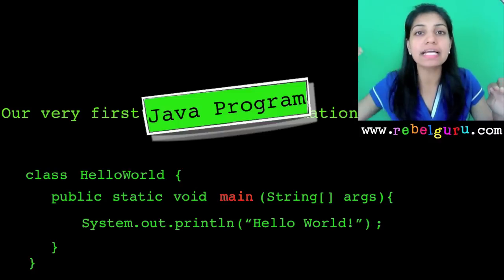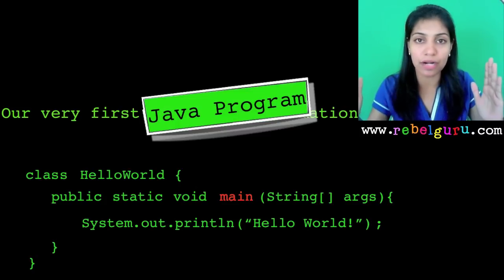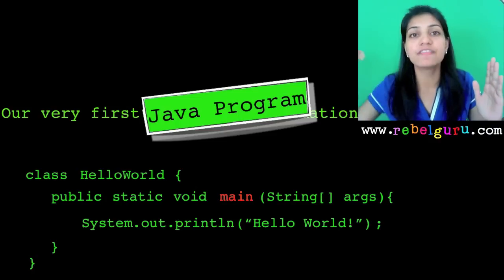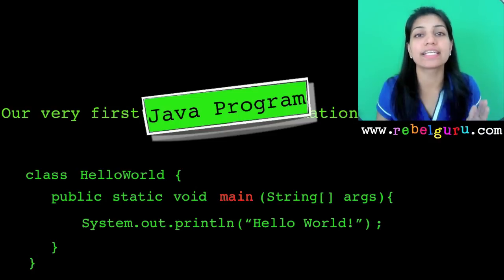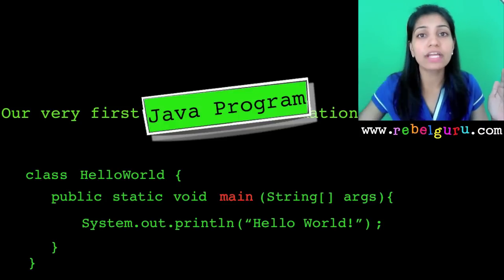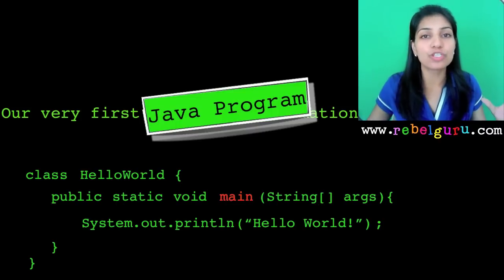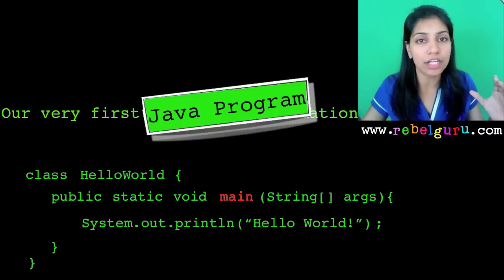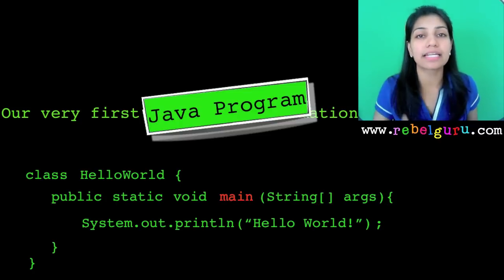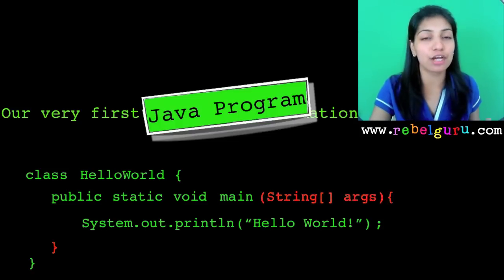When the user gives the command to run the program, along with that command the user passes input that the program expects. This input goes and gets stored in the String array called args. If you don't give that input, nothing gets stored in the array. This input is given along with the command line, which is why it's called command line arguments. In this Hello World program, no command line arguments are passed, so this array remains empty.